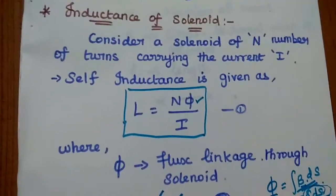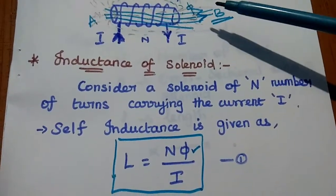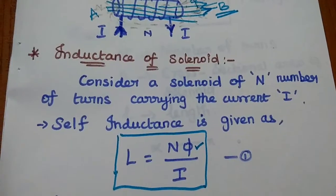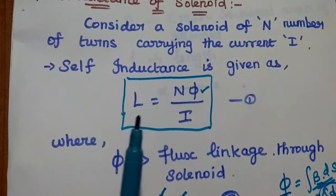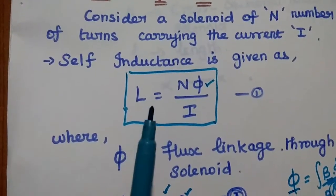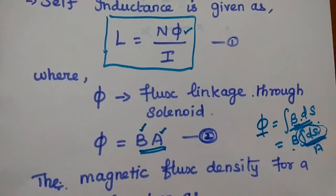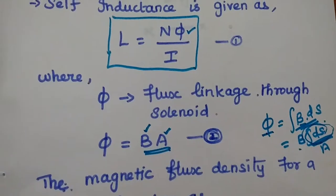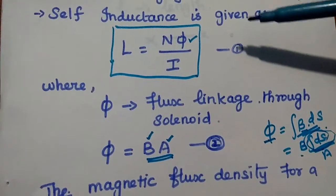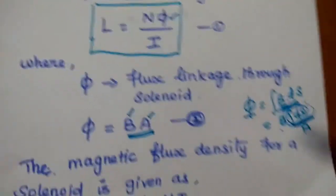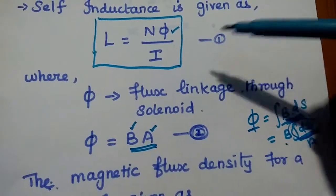Now we are going to derive the inductance of solenoid. For that, we have to consider a solenoid of N turns which is carrying the current capital I. In order to find out the inductance, we can take the formula of self-inductance: capital L is equal to N phi by I. We can consider this self-inductance equation as the first equation. Then, we are going to find out the value of phi and substitute that in this equation to get the inductance.